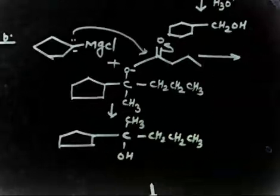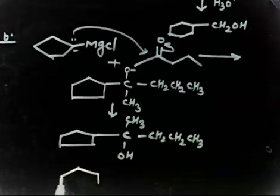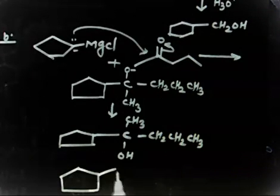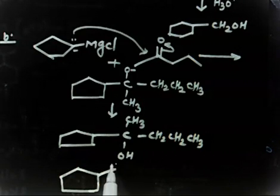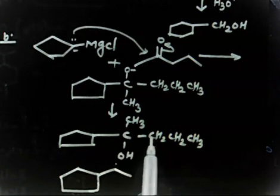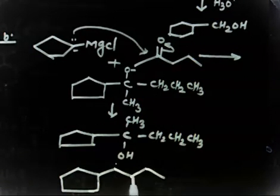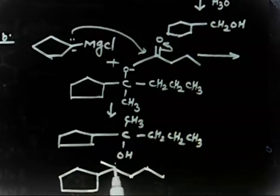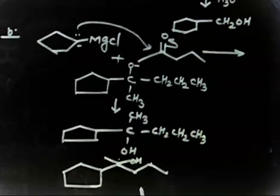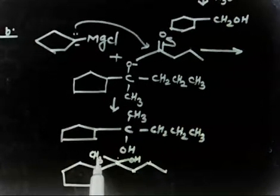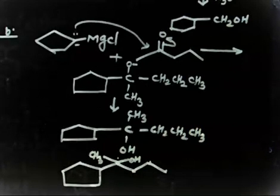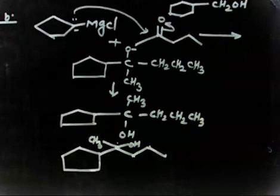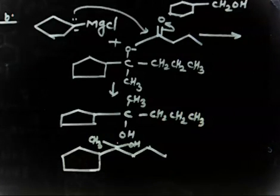After hydrolysis, you get a 5-membered ring with an OH group and the CH₂CH₂CH₃ chain. You can also show this in a bond line diagram. In the bond line diagram, you have a 4-carbon ring with an OH group attached. If you have copied this, let's discuss part C.